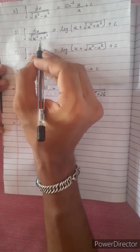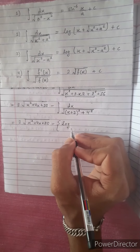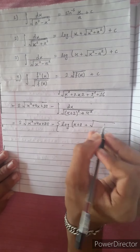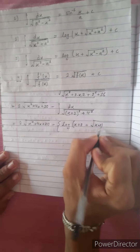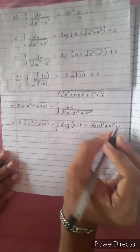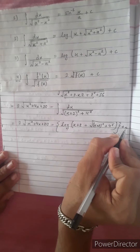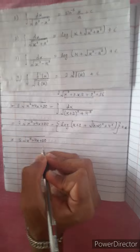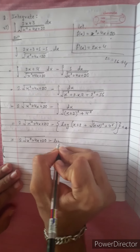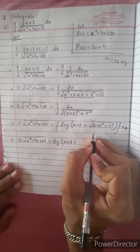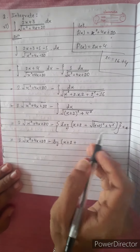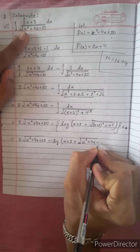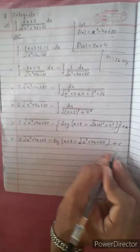The equation is of the form x squared plus a squared. We apply the formula: log of (x plus 2) plus under root of (x squared plus a squared), then plus under root of (x squared plus a squared) plus C. This is the same form, so the final answer is log(x plus 2) plus under root of (x squared plus 4x plus 20) plus C.